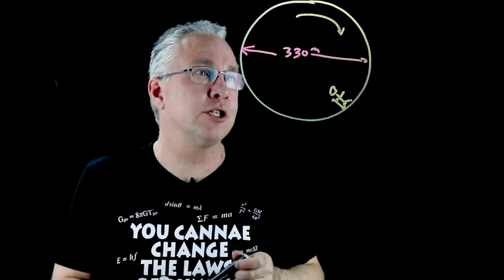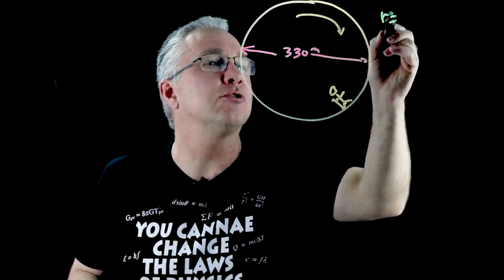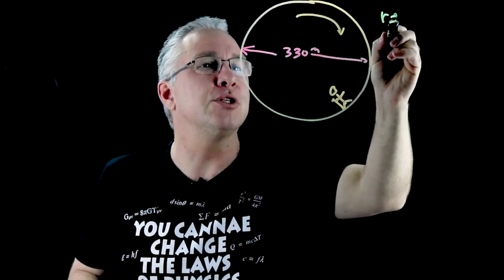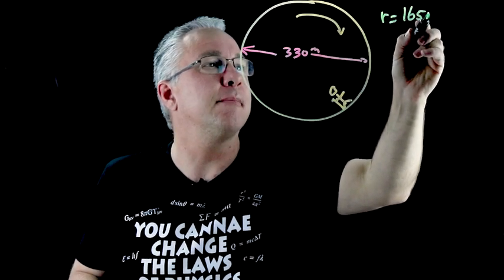Now how do we solve that? Well first of all let's write down what we know. So we know that the radius is equal to obviously half of that which is equal to 165 meters.